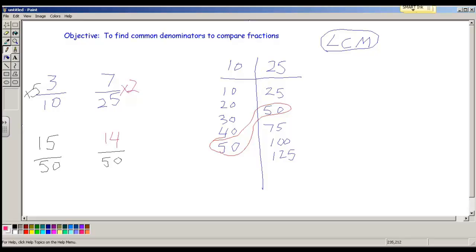So which number was bigger, 3 tenths or 7 25ths? The answer is 3 tenths. So the steps are, in order to find a common denominator, you need to first make a chart.